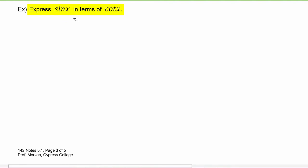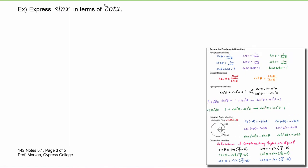In this example we have to express sine of x in terms of cotangent of x, so that means the left hand side will have sine of x all by itself, and on the right hand side we'll have a function that only involves cotangent — no other trig functions. Now when we look at our list of identities, we don't see one that directly relates sine and cotangent together, so we're going to have to couple together two different identities to get to our result.